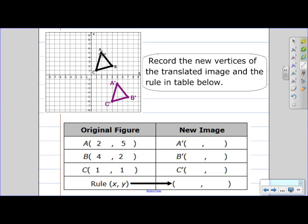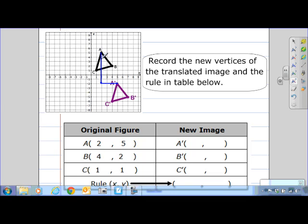So we'll use A as our point of reference. So it looks like we're traveling down and to the right. So how many units down did we go? One, two, three, four, five, six, seven. So we went seven units down.